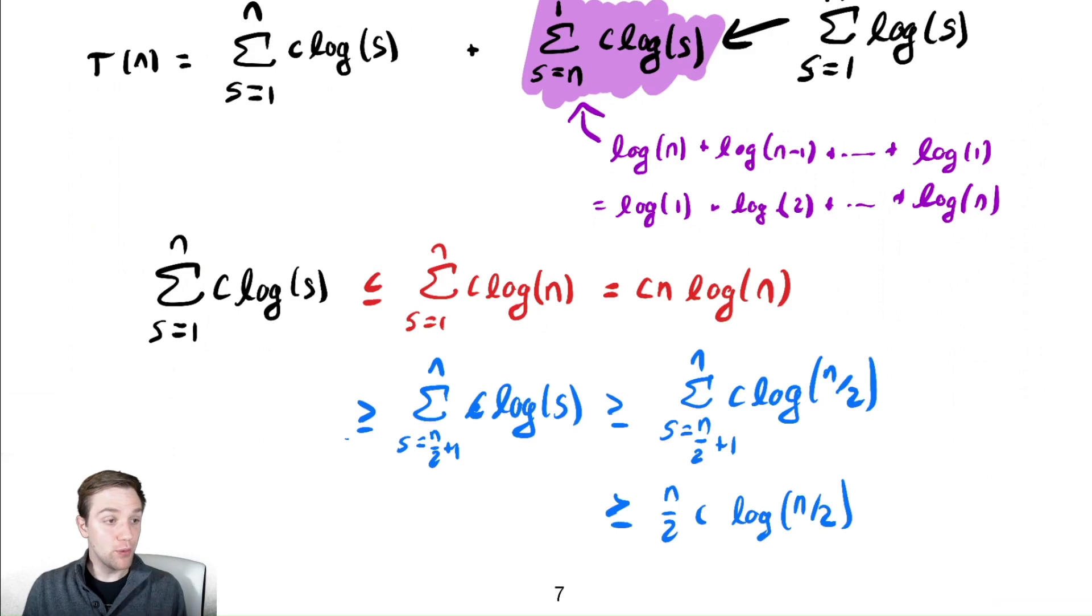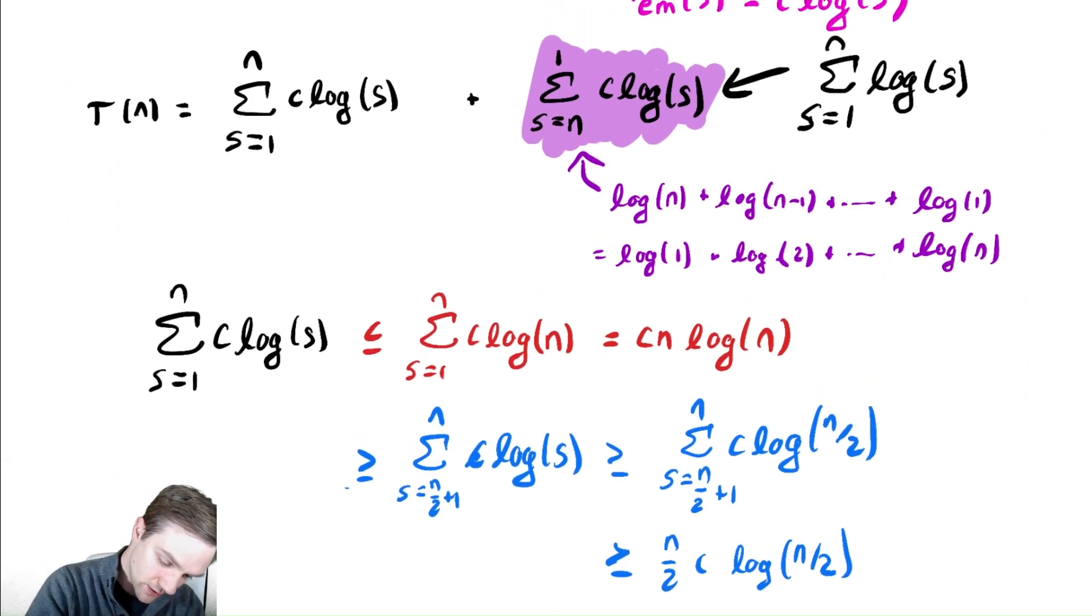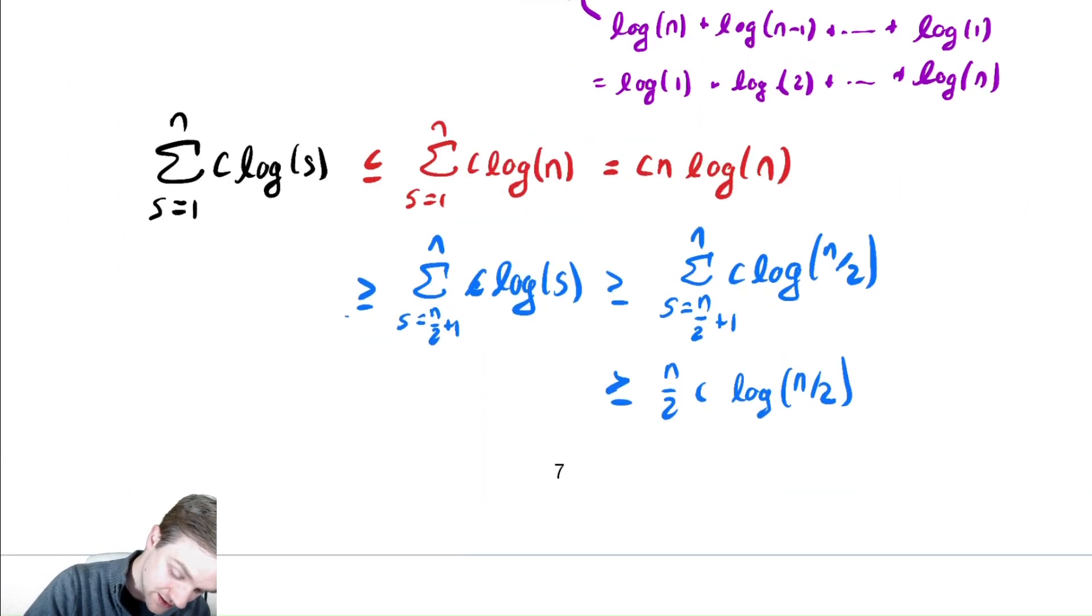So, these summations are both in theta of n because they are identical summations. So, I can easily, from there, conclude that t of n is also in theta of n log n.